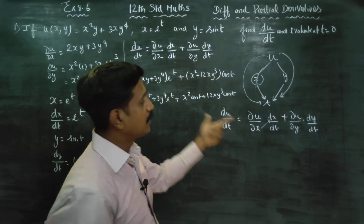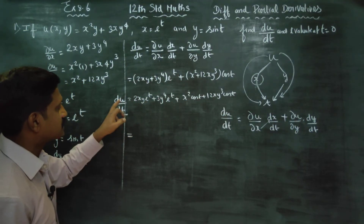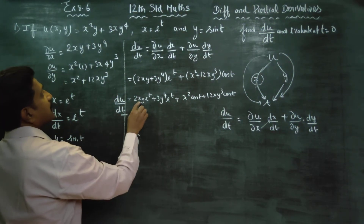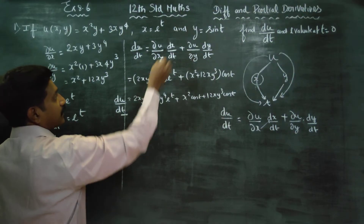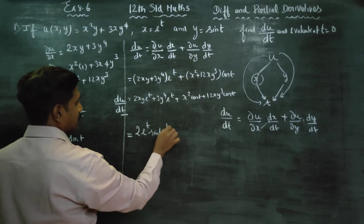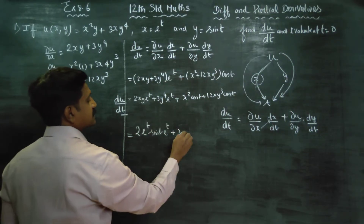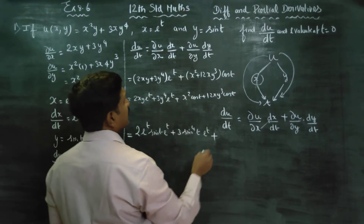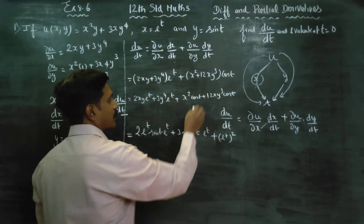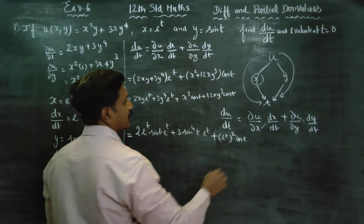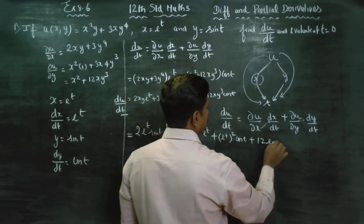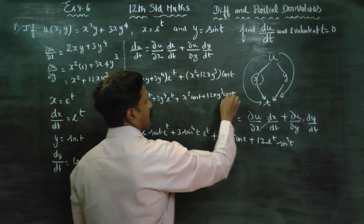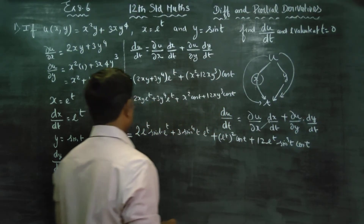After finalization, you have to replace x and y with t. Because the sum asks for du/dt, replace x with e^t and y with sin(t) — two times. So: 2(e^t)(sin⁴t)(e^t) + 3(sin⁴t)(e^t) + (e^t)²(cos t) + 12(e^t)(sin³t)(cos t). Simplifying the e^t terms gives the final expression.